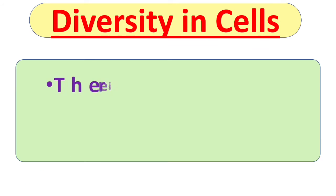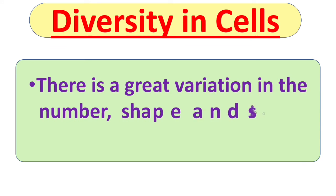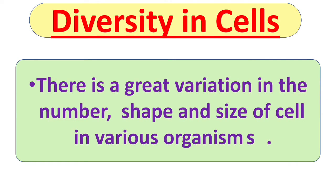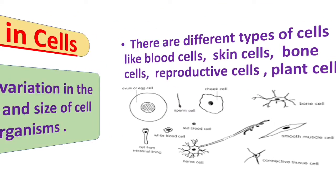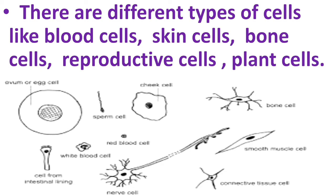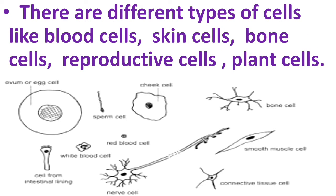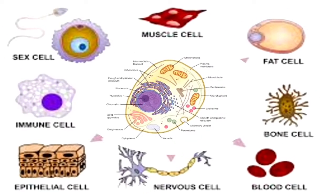Next is diversity in cells. There is a great variation in the number, shapes and size of cells in various organisms. There are different types of cells like blood cells, skin cells, bone cells, reproductive cells, plant cells, etc. As you can see in the picture, there are different types of cells and all of them have different shapes and sizes.